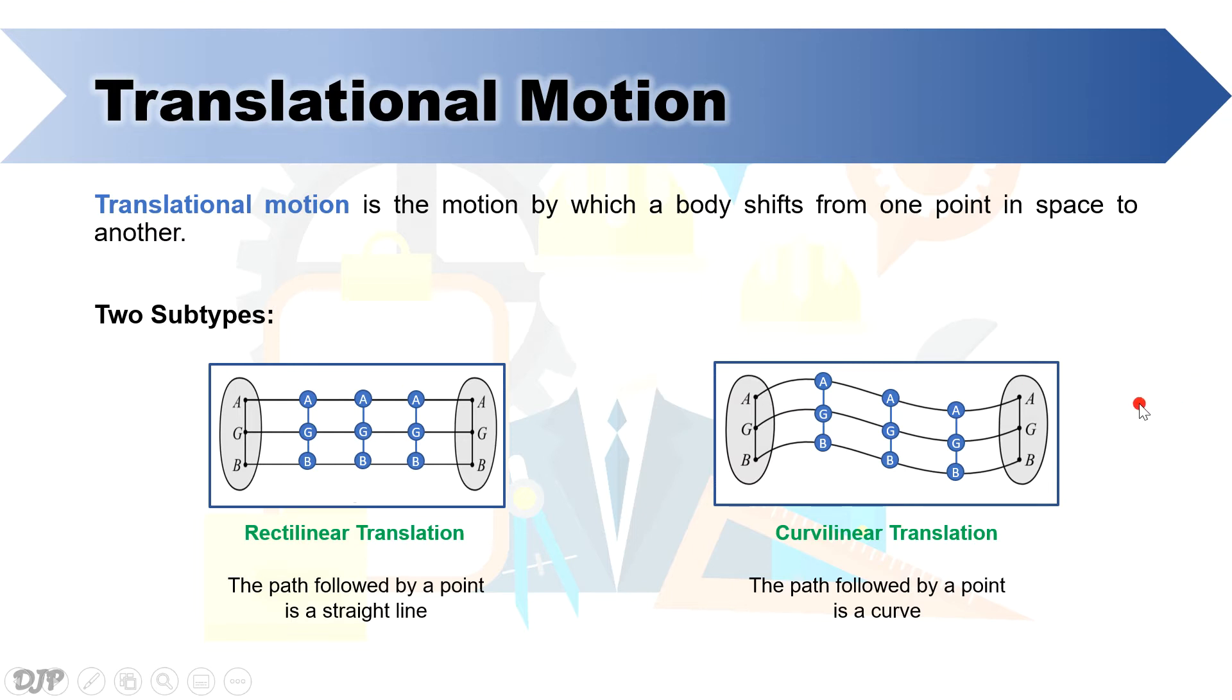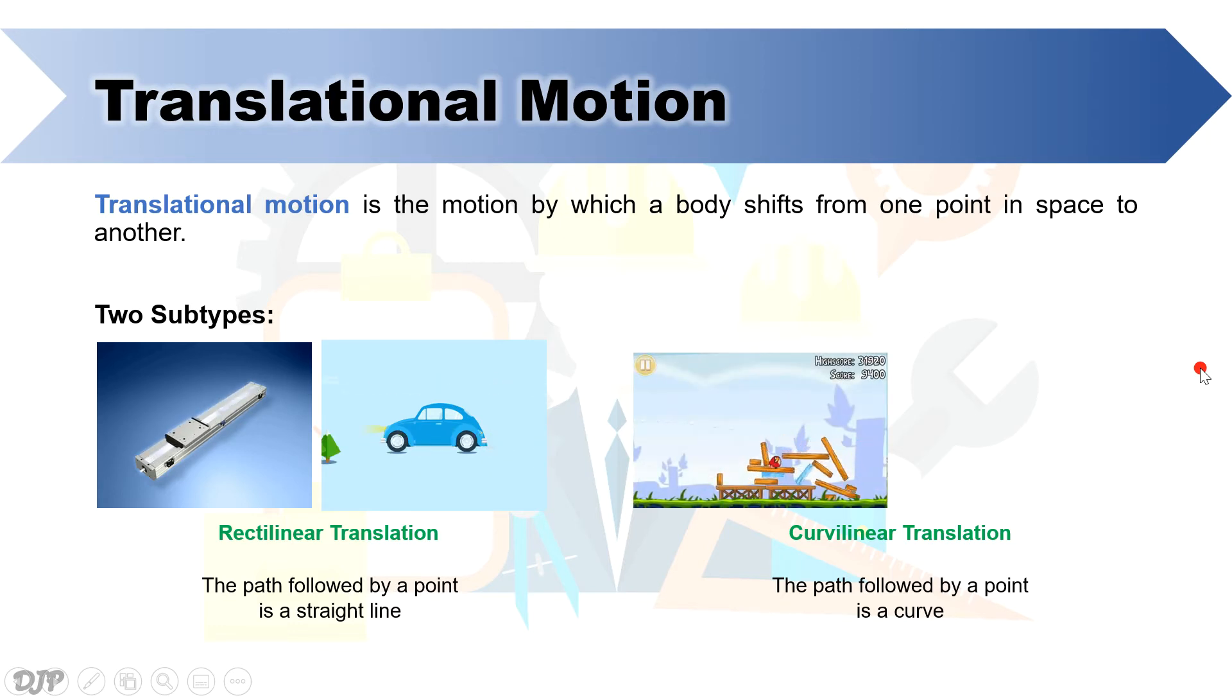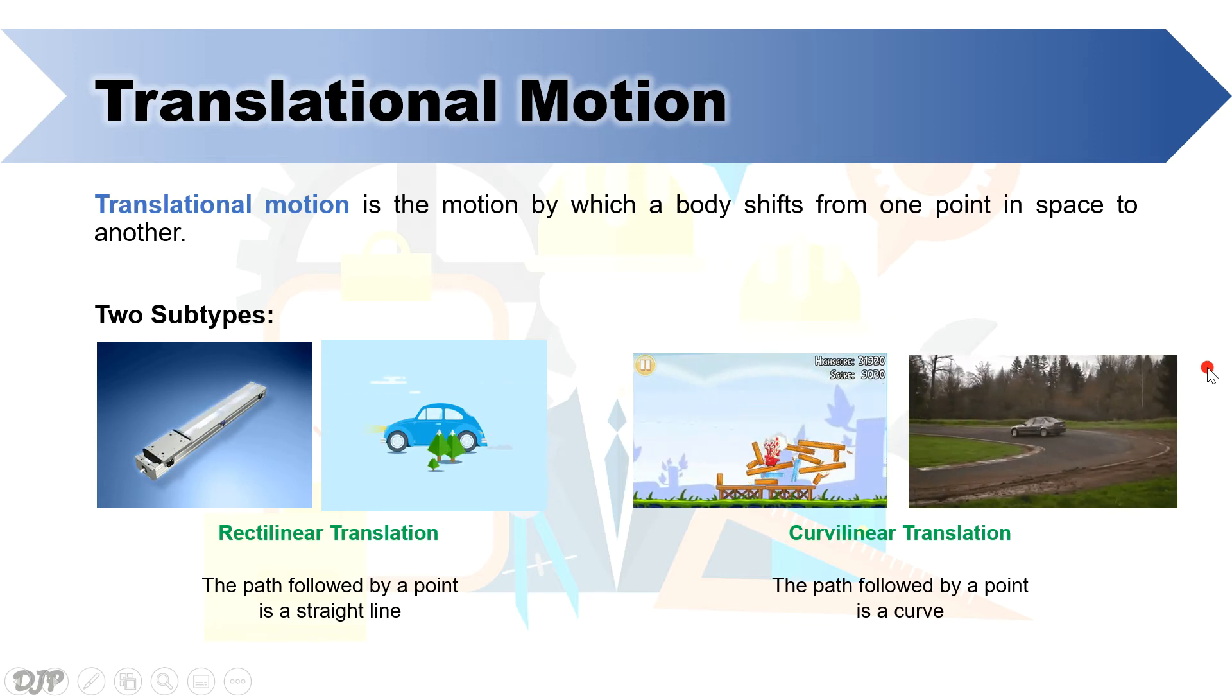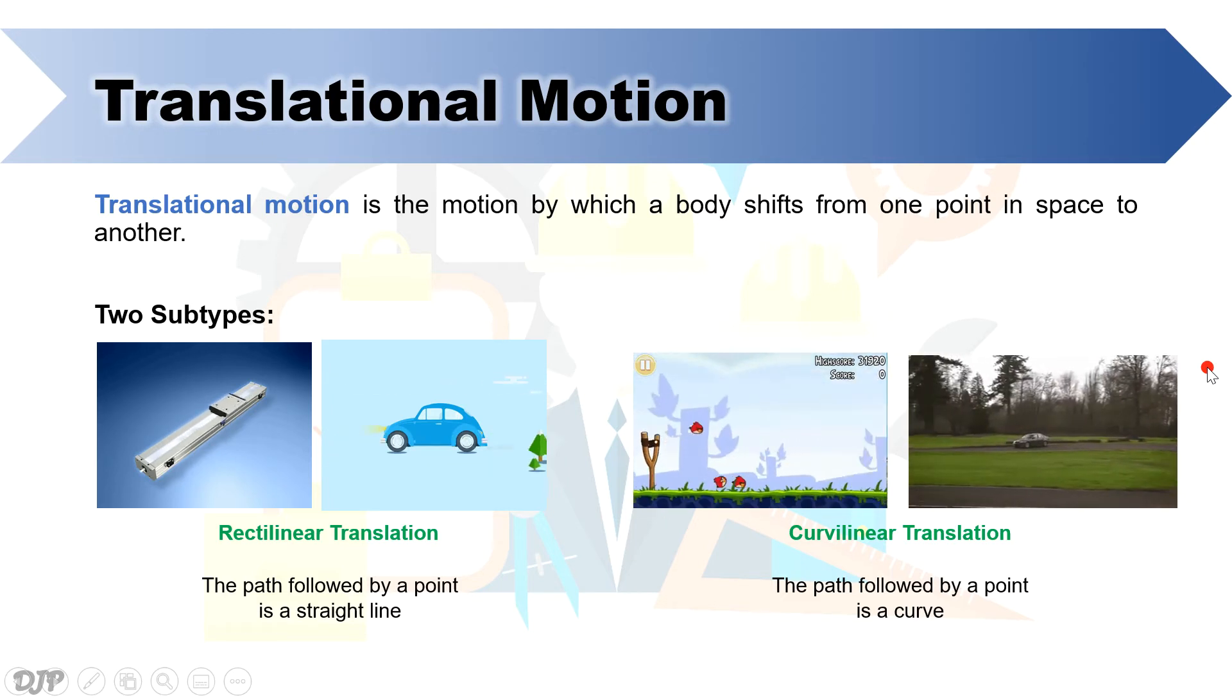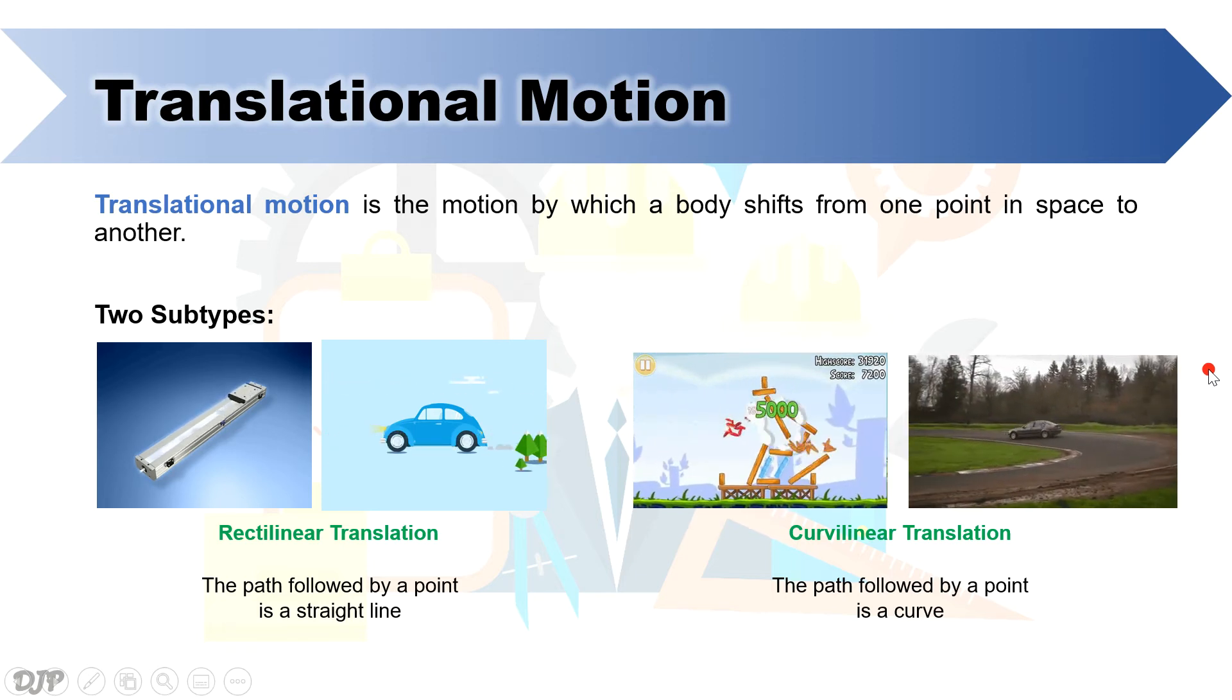To relate those subtypes in real life, let's look at some examples. The straight movement of the printhead of a printer, as shown, and also the travel of a car in a straight road are examples of rectilinear translation. For curvilinear translation, we have projectile motion as an example along vertical plane, and we have the curves of roadway as an example along horizontal plane. Now that we have an understanding about translation, let's go back a few slides and look at other types of motion.